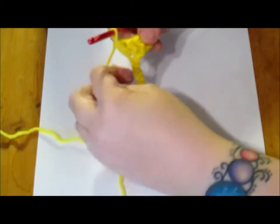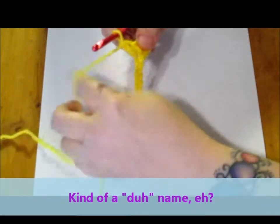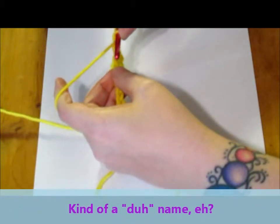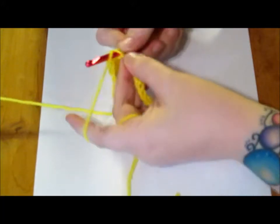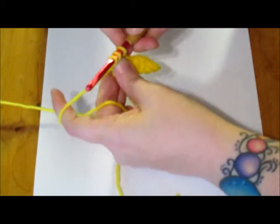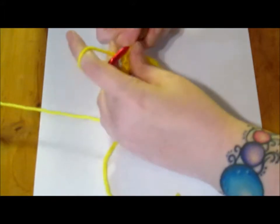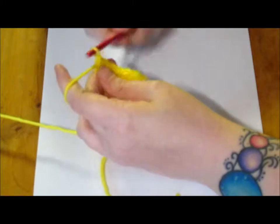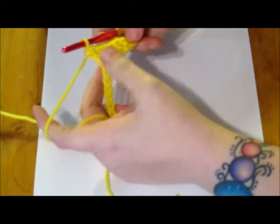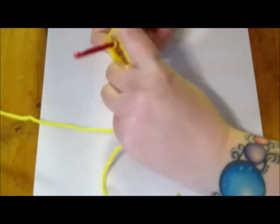So, I'm going to do it one more time, yarn over, slip it into that next stitch, yarn over, pull through. You have three loops on your hook, yarn over, pull through two loops, yarn over, pull through two loops. Now, you can do just about any crochet stitch that way. I'll go ahead and show you one more, the triple stitch.